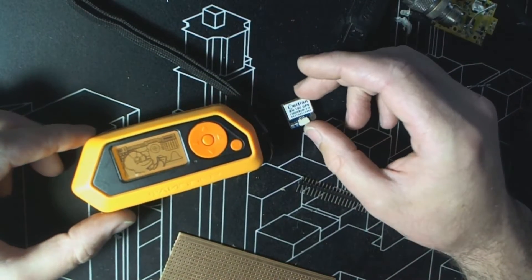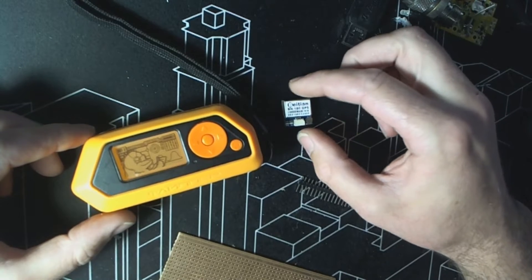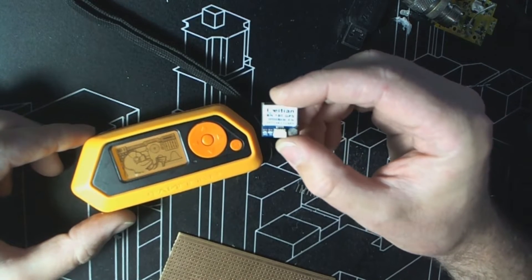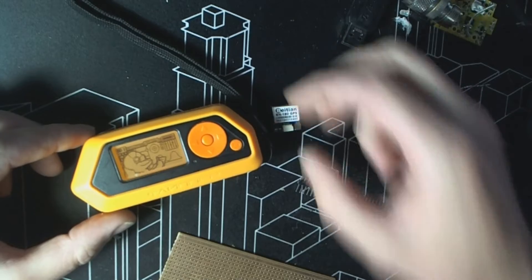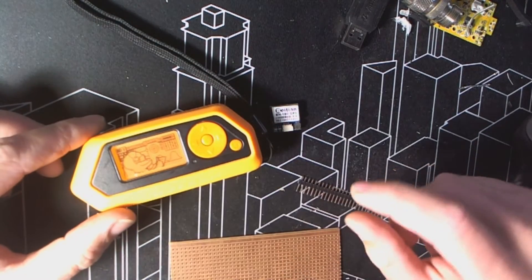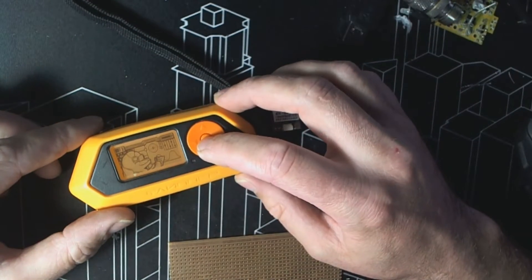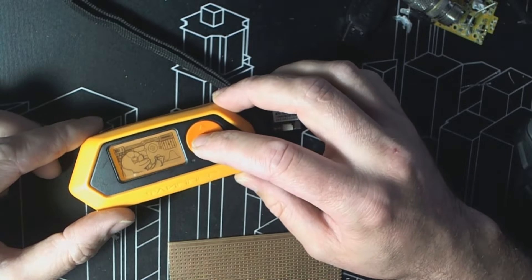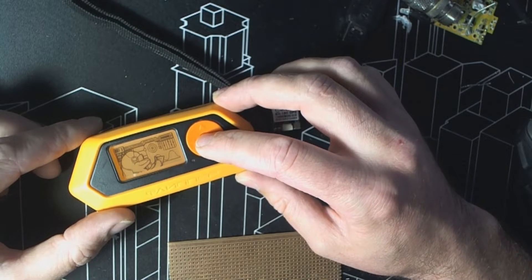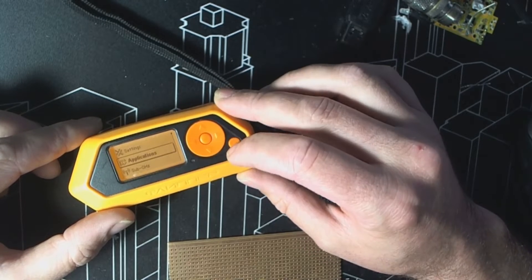G'day guys, this is another Flipper video. We're going to wire up a BN180 GPS onto a piece of Veraboard to use the GPS application by Ezod on Github.